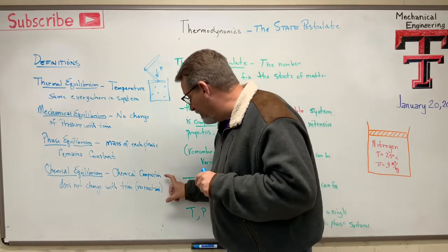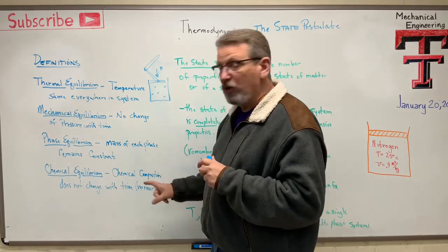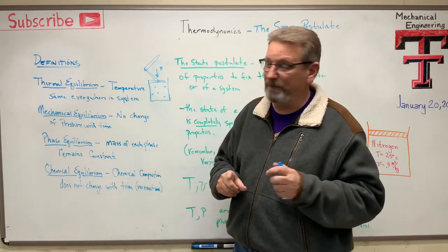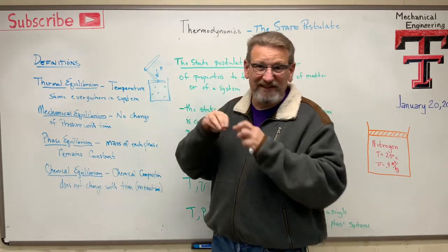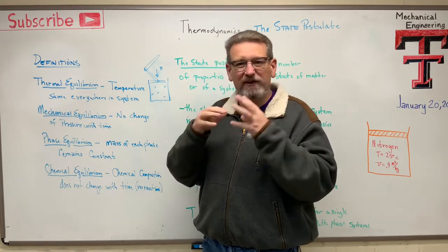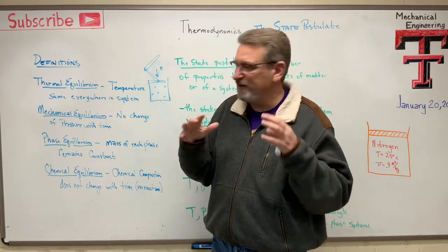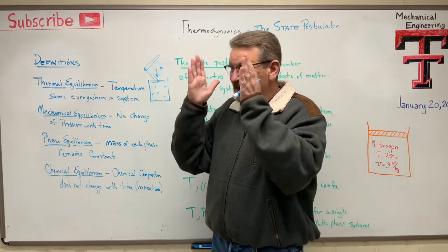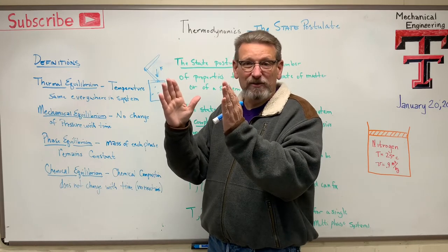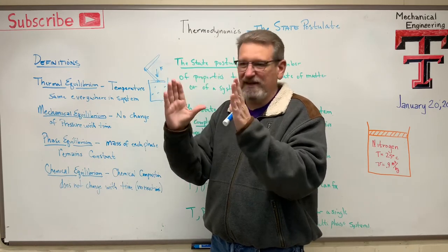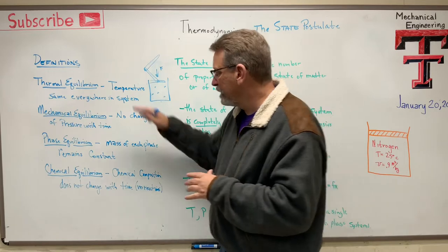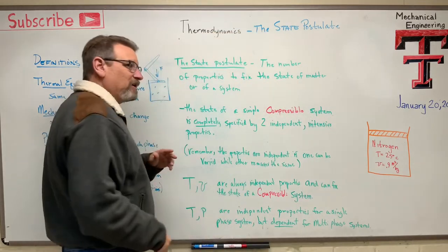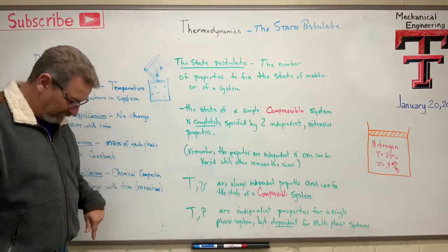We also have a chemical equilibrium, which means the chemical composition is not changing with time. So there's no chemical reactions in there. Those things aren't dissolving and giving off exothermic heat and doing all kinds of things. All that is done, and it's just sitting there just like a glass of water, and if I come back tomorrow, it's going to be the same exact composition tomorrow. So that's what we mean when we're talking about equilibrium of the system.